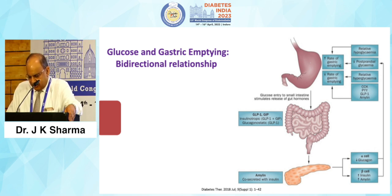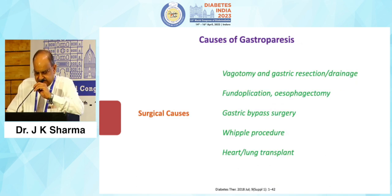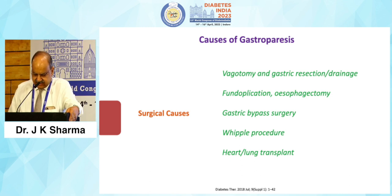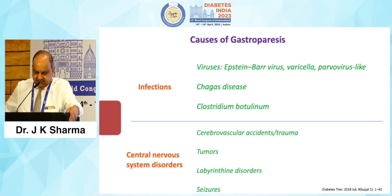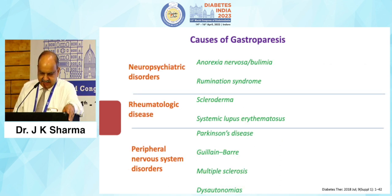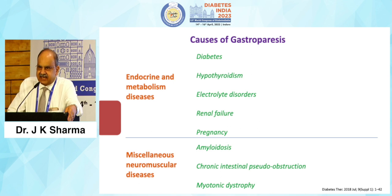There is a great role of gut hormones. The causes of gastroparesis are not only diabetes. Surgical causes include vagotomy, gastric resection, drainage, fundoplication, esophagectomy, gastric bypass surgery, Whipple procedure, and heart and lung transplant. Certain infections like viral infections, Chagas disease, and Clostridium botulinum can cause it, as can CNS disorders like cerebrovascular accident, trauma, tumor, and seizures. Neuropsychiatric disorders such as anorexia nervosa, bulimia, and rumination syndrome also apply. Endocrine and metabolic diseases include diabetes, hypothyroidism, electrolyte disorders, renal failure, and pregnancy. Miscellaneous neuromuscular diseases include amyloidosis, chronic intestinal pseudo-obstruction, and myotonic dystrophy.